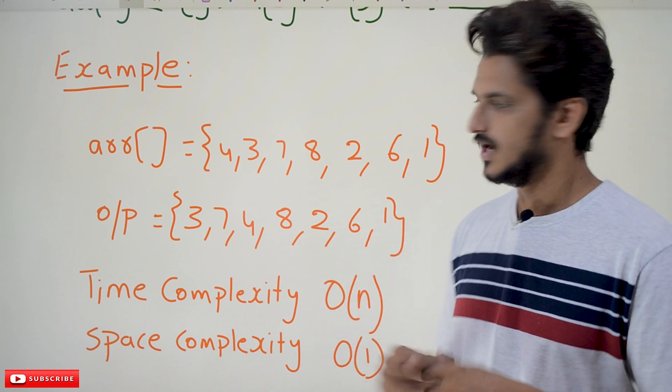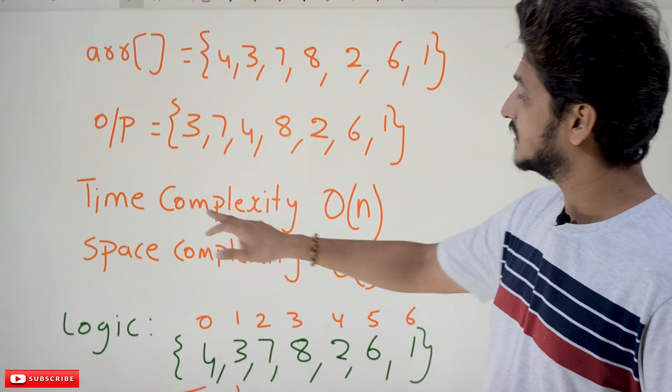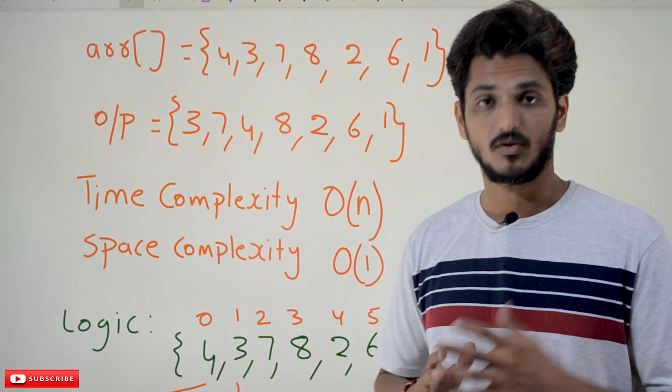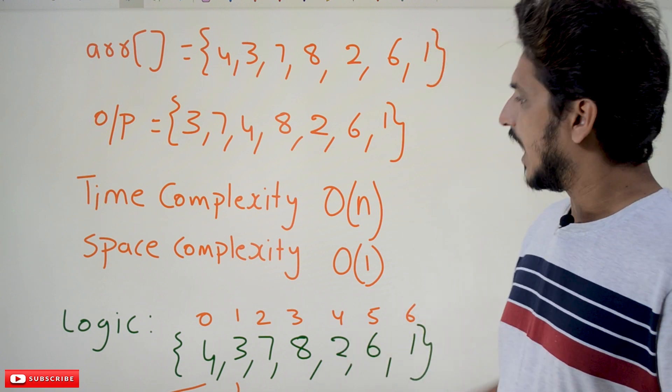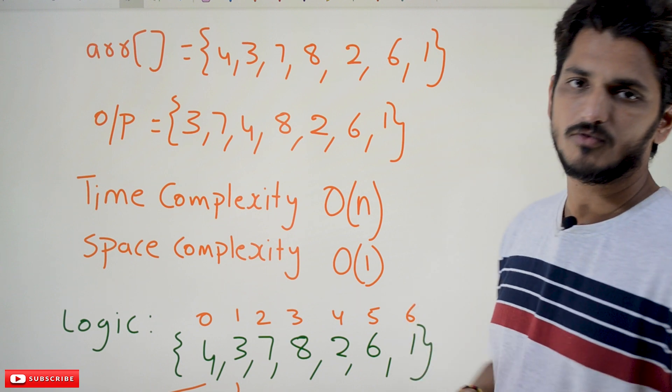But you have to maintain a time complexity of big O of n. The coding which you have to write should be of the order of n and the space complexity should be order of 1.